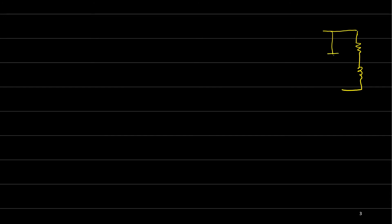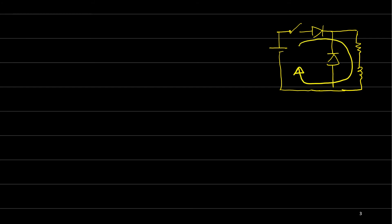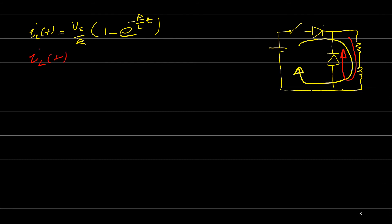Now let's summarize: we have our freewheeling diode, the other diode, and the switch. The current will be flowing first — the yellow current — when the switch is on, and the red current when the switch is off. We derived the equation for each one: the yellow current is iL(t) = (VS/R) × (1 − e^(−R/L × t)), and the red current is iL(t) = i1 × e^(−R/L × t). Now let's draw these two currents and see how they look.